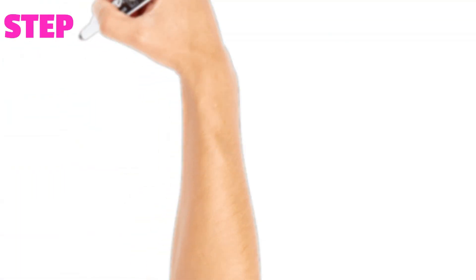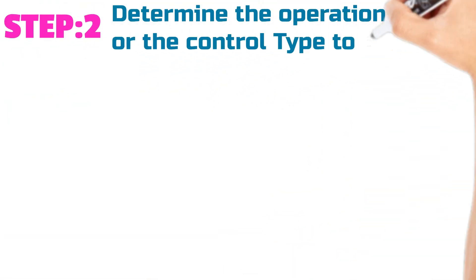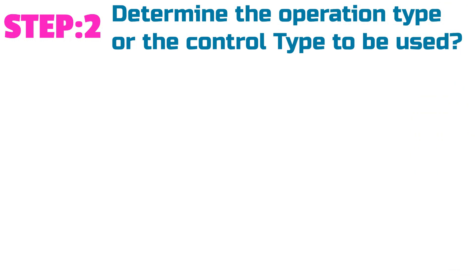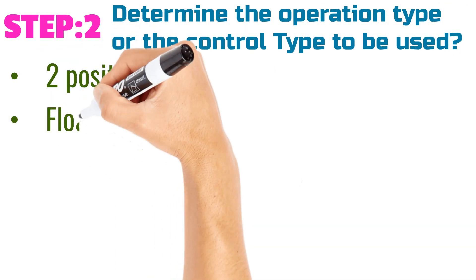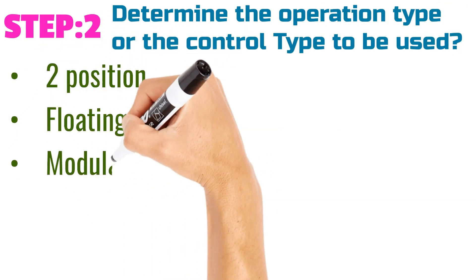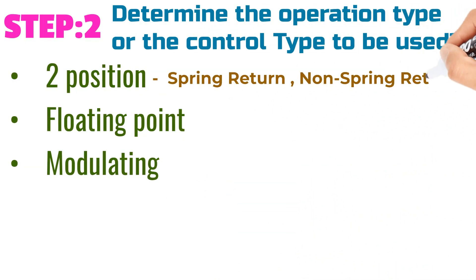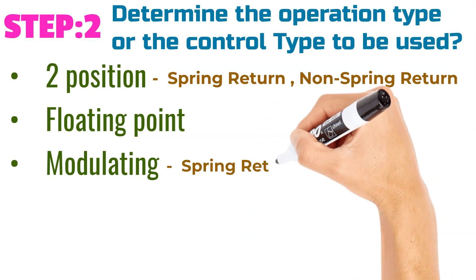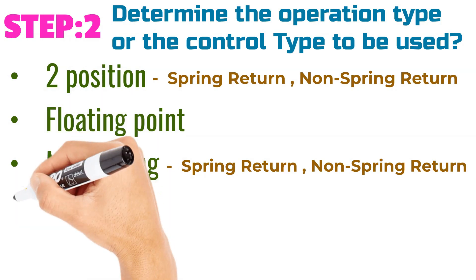Step number two: Determine the operation type, or the control type to be used: position control, floating point control, or modulating control. These damper actuators whether come with spring return or non-spring return.